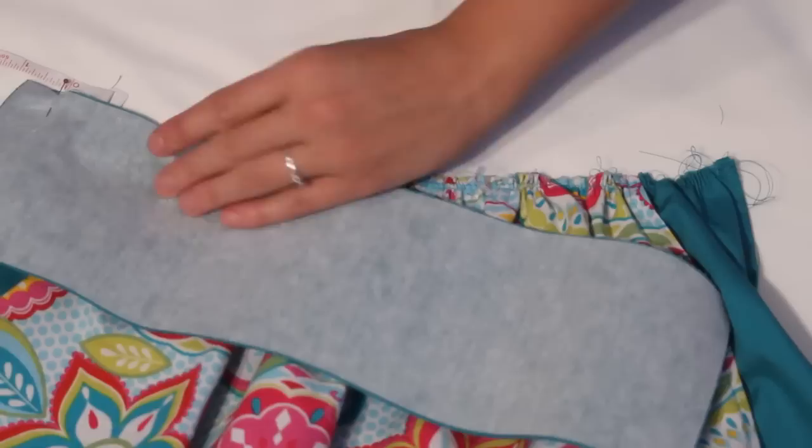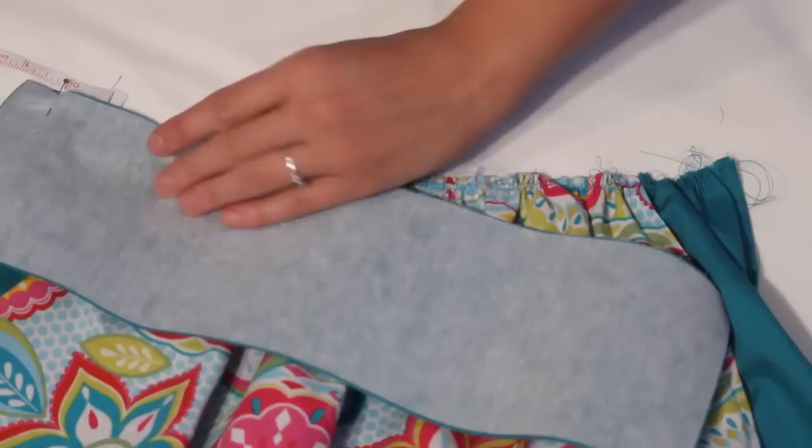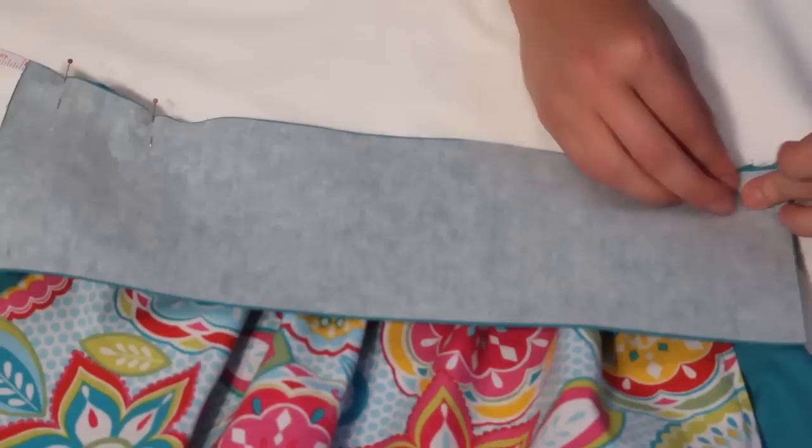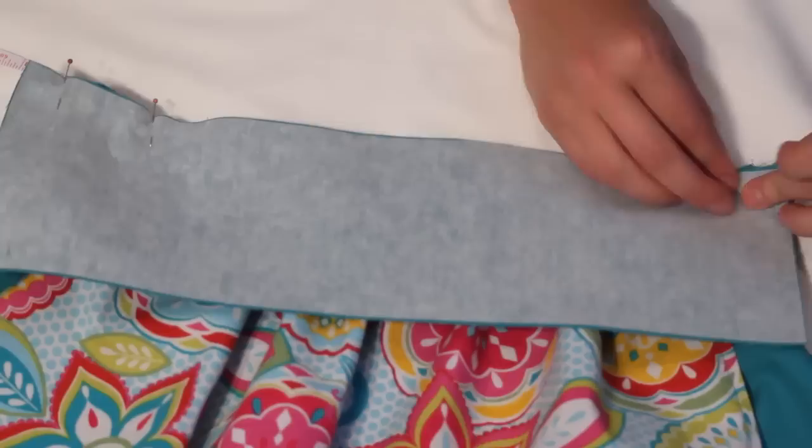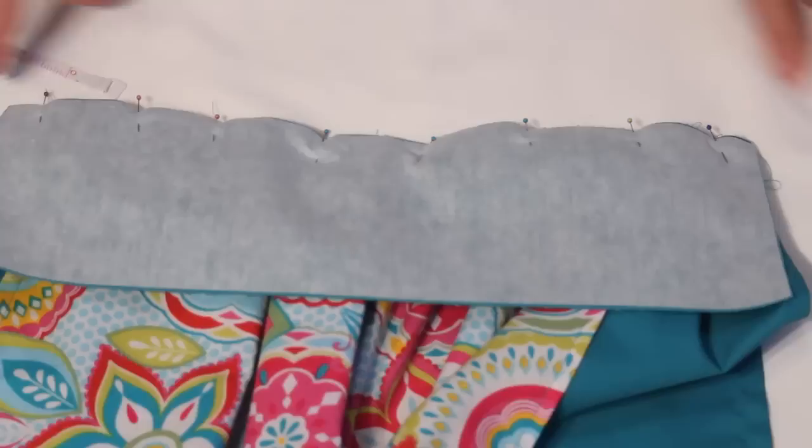Place one waistband piece on top right sides together with one half inch hanging over on each end. Pin in place. Sew to attach with a half inch seam allowance. All the basting and other seams that were sewn before need to be less than a half inch.